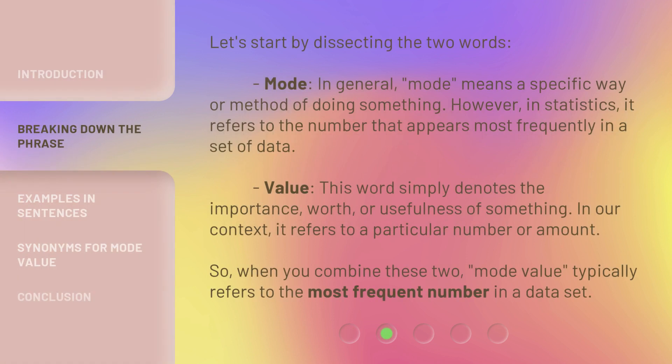Let's start by dissecting the two words. Mode. In general, Mode means a specific way or method of doing something. However, in statistics, it refers to the number that appears most frequently in a set of data.